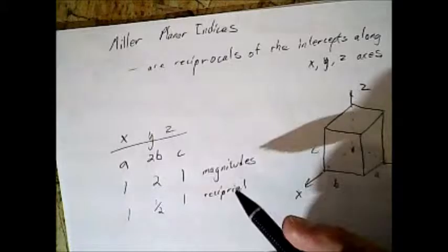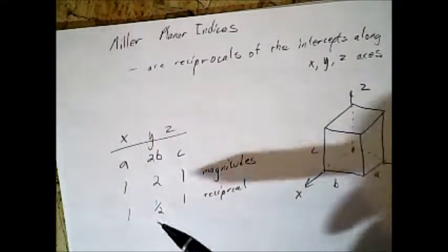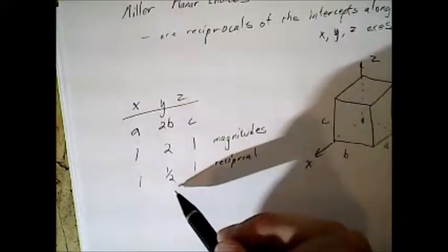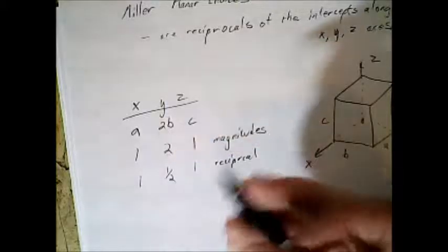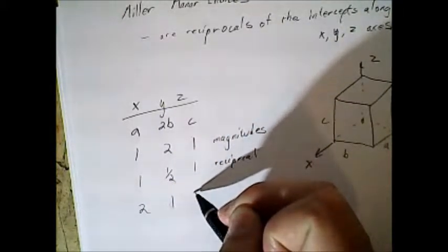And then you want to basically normalize this to make sure you don't have any fractions, because Miller indices shouldn't have any fractions. In this case, we have a common denominator, two, so we'll multiply through by two, and you'll end up with 2, 1, and 2.